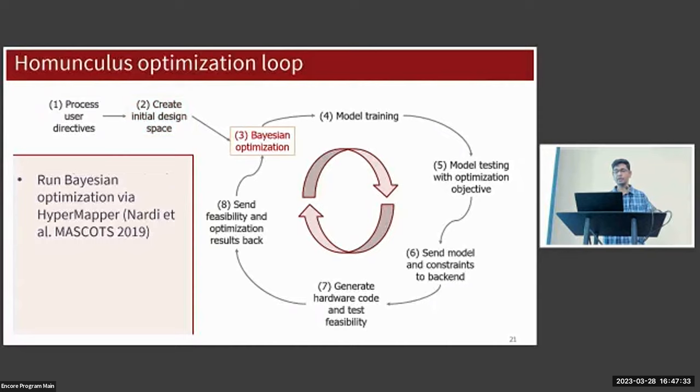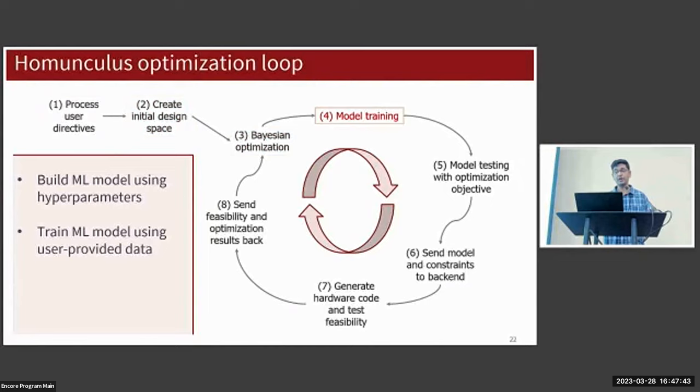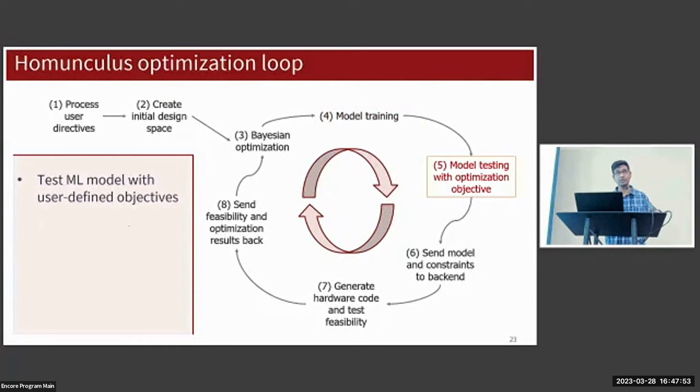We'll use that design space to start the actual Bayesian optimization process, and we do this using a framework called Hyper Mapper. Hyper Mapper will then start recommending ML configurations as batches of hyperparameters. Using those provided ML parameters, we'll build the actual models and then train them with the data provided by the user in Alchemy. Then we'll test those same models with the optimization objective also provided in Alchemy.